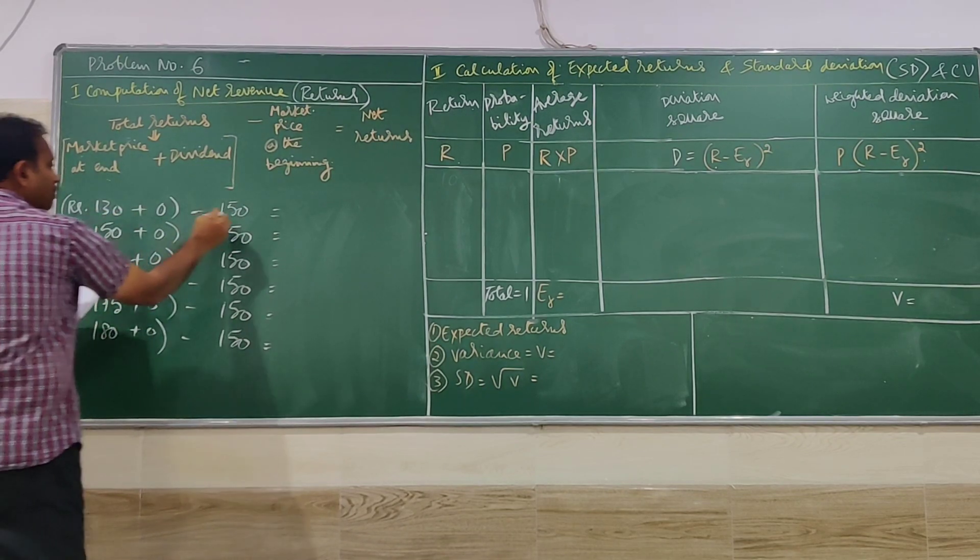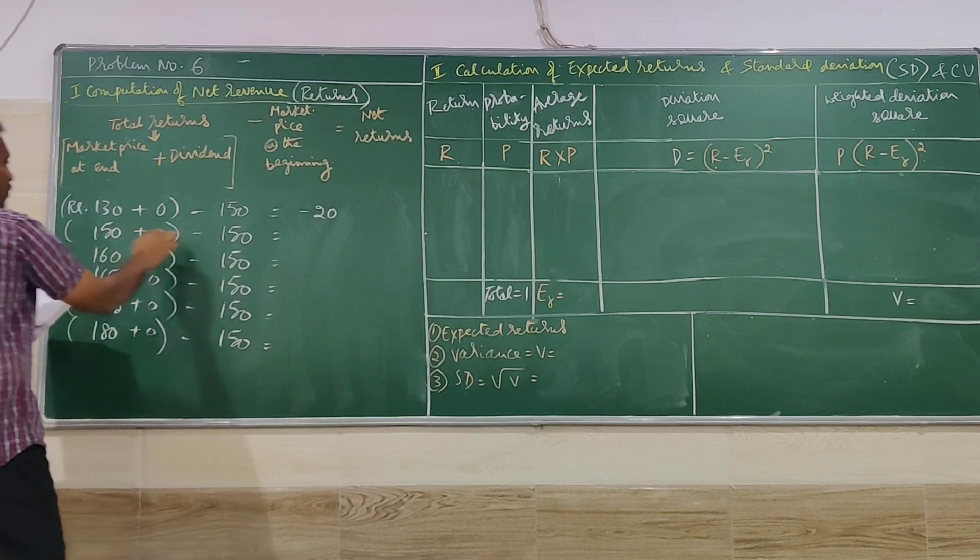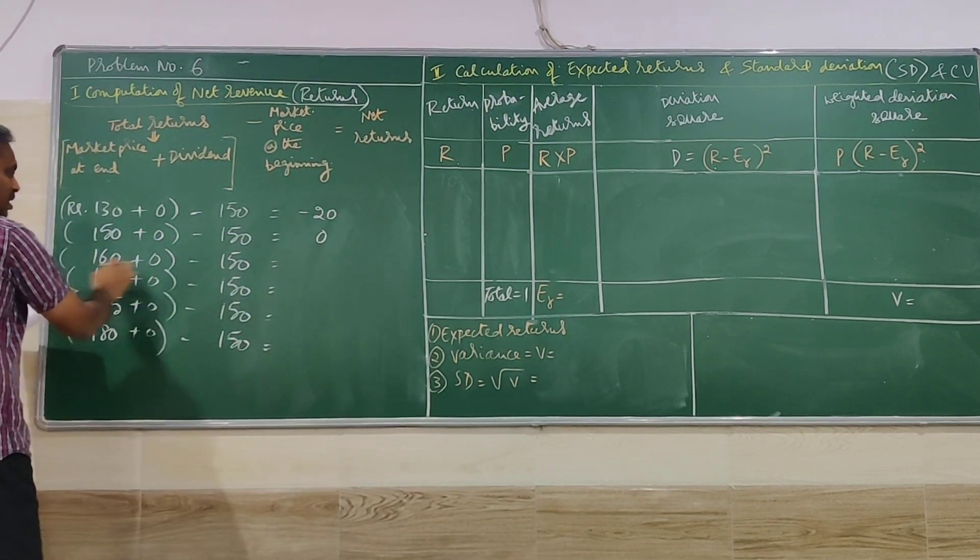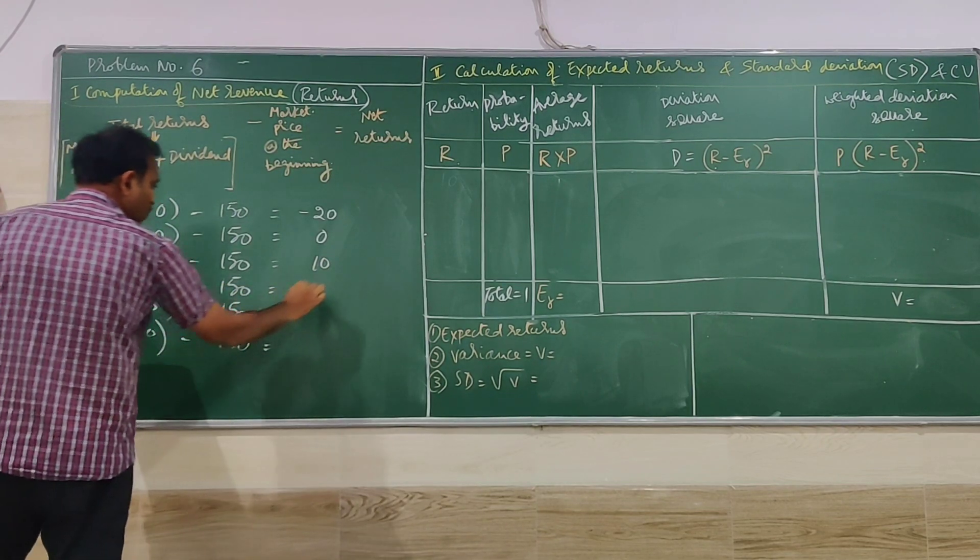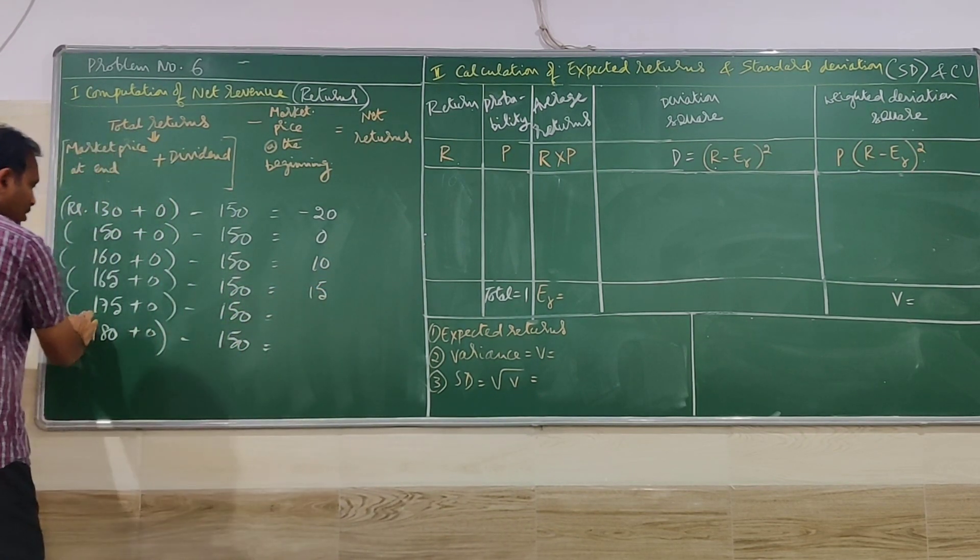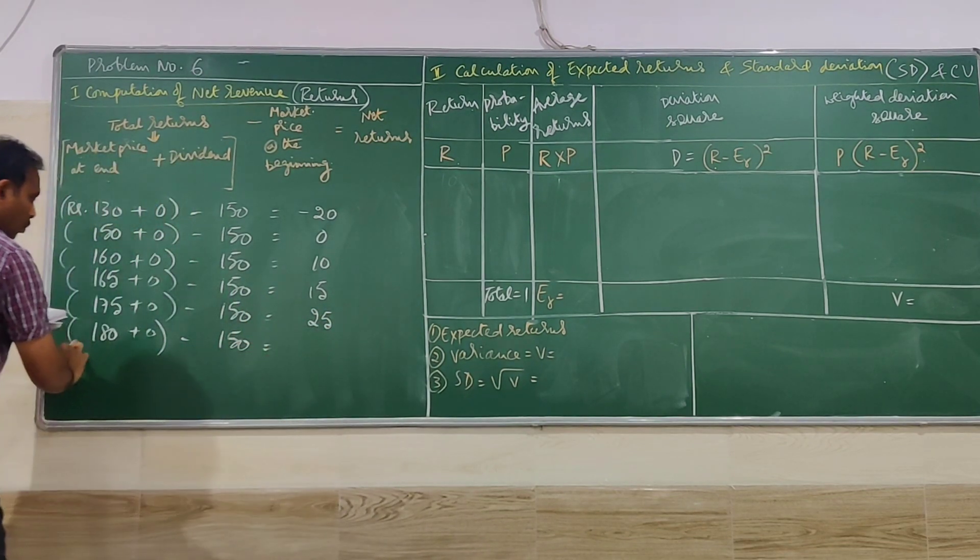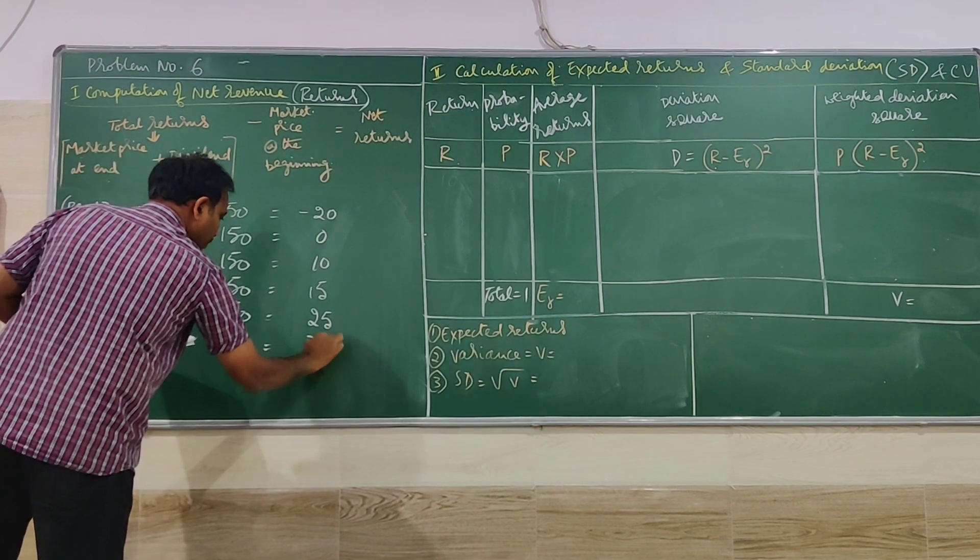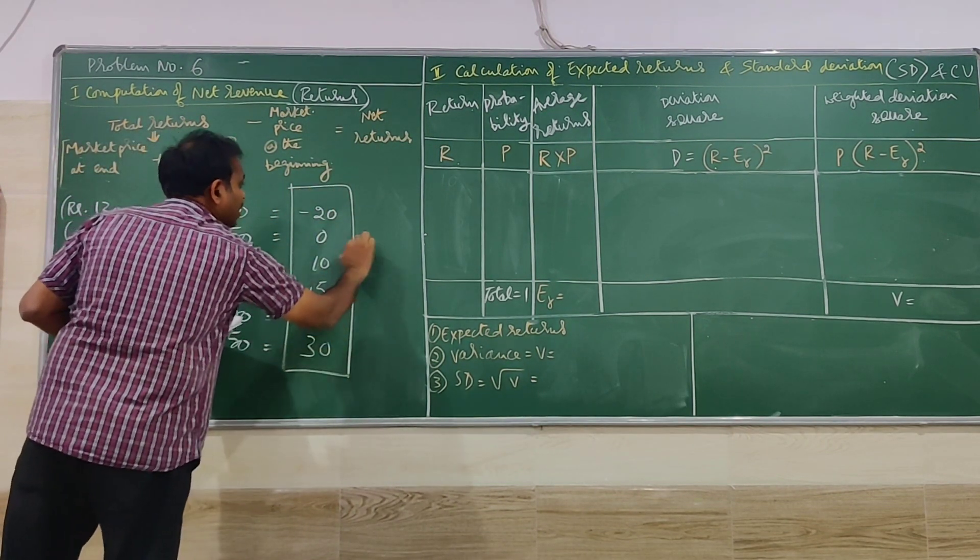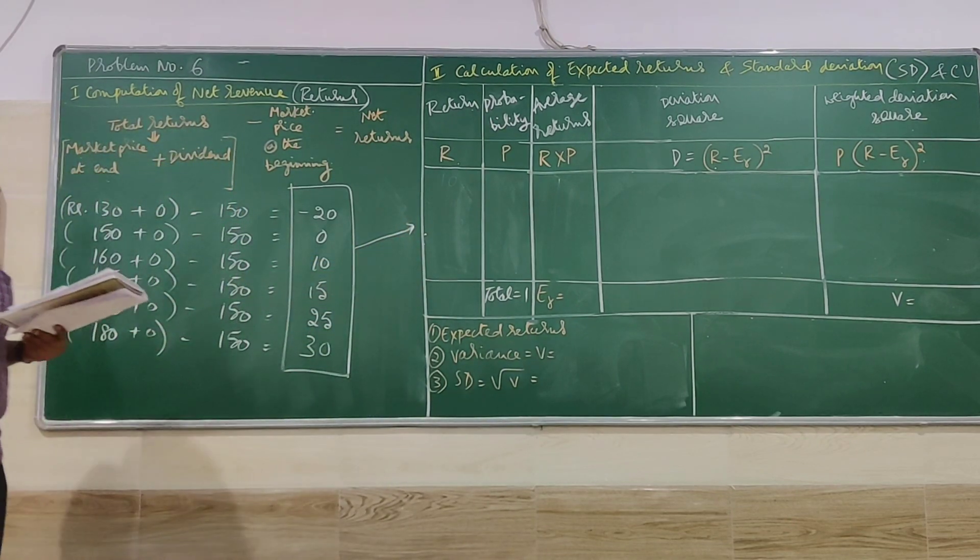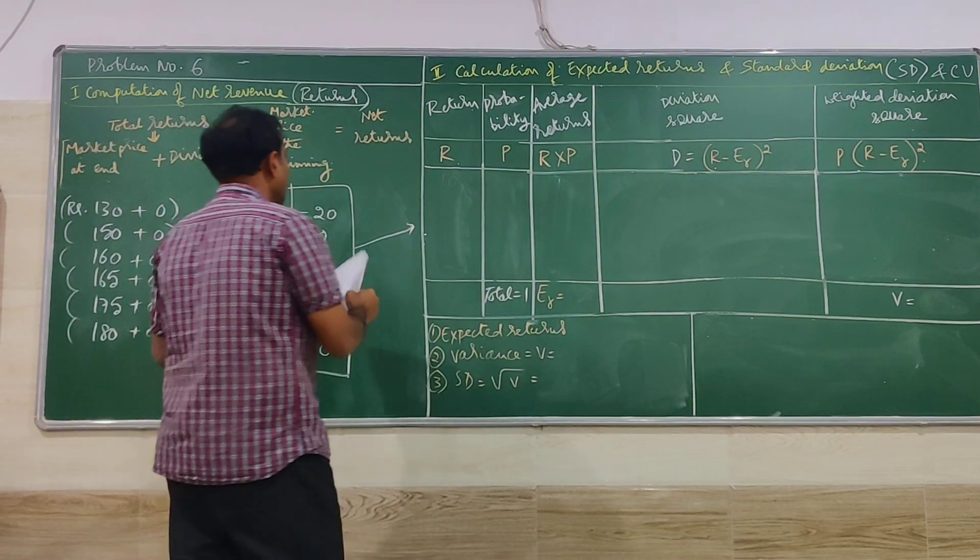So which value to be substituted where you have to be careful and understand. So here 130 minus 150 is minus 20. 150 minus 150 is 0. 160 minus 150 is 10. 165 minus 150 is 15. 175 minus 150 is 25. 180 minus 150 is 30. So this is the one which is to be taken for the main table for calculation of expected return and standard deviation.